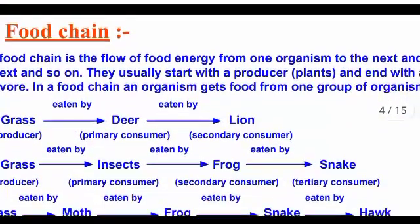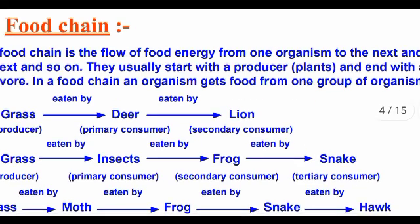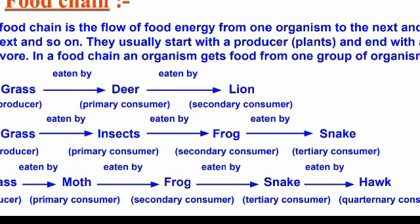The next concept is food chain. A food chain is the flow of food energy from one organism to another organism. One example is: grasses → deer → lion.